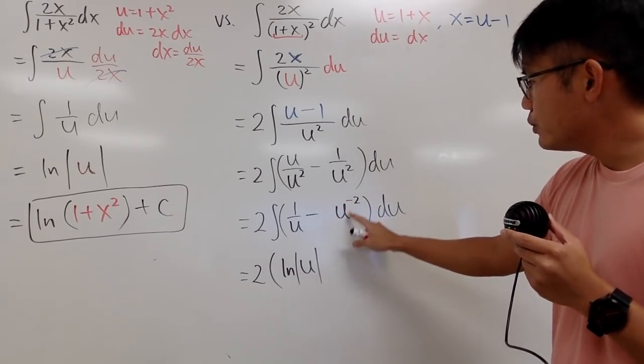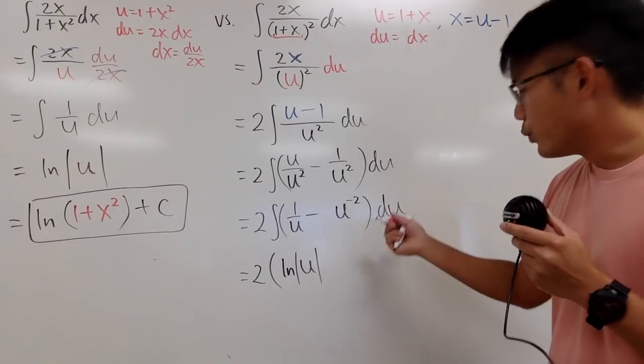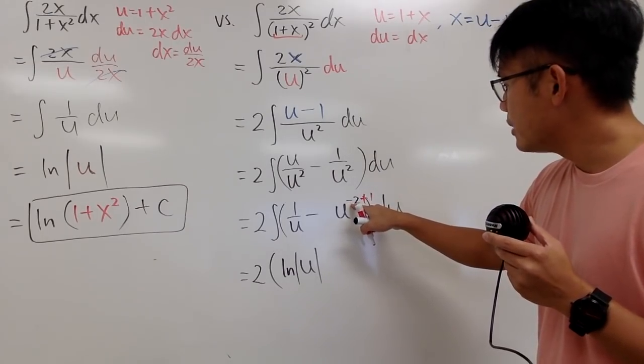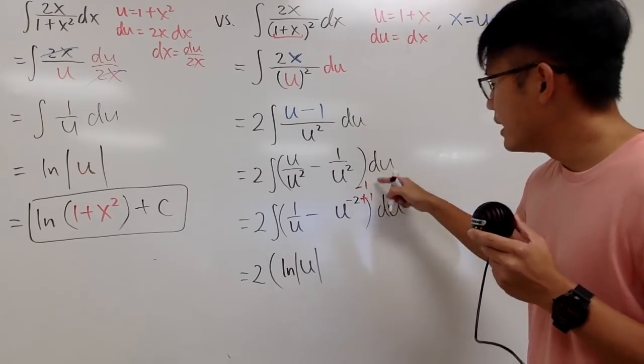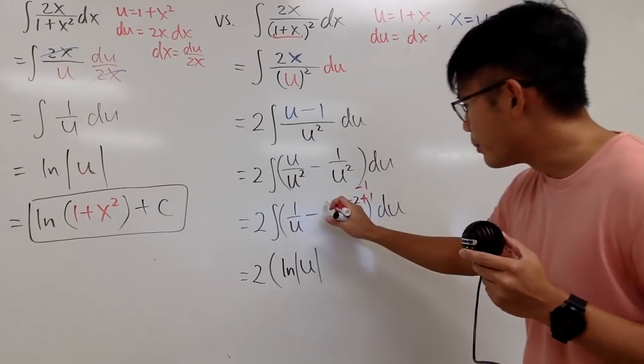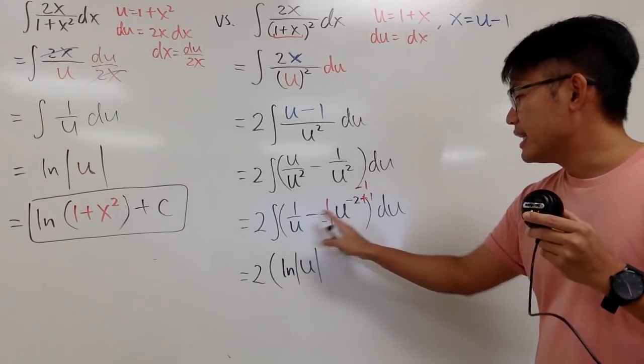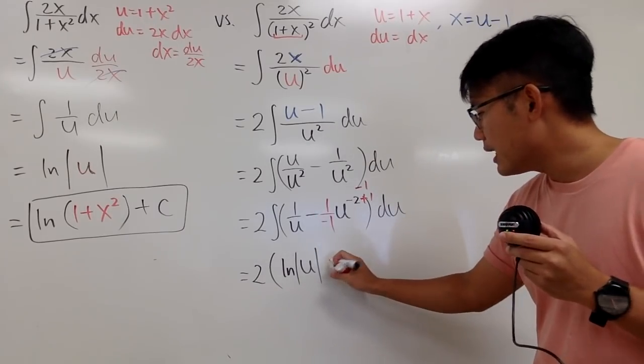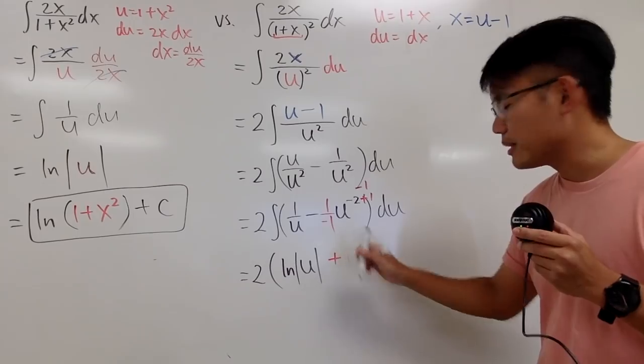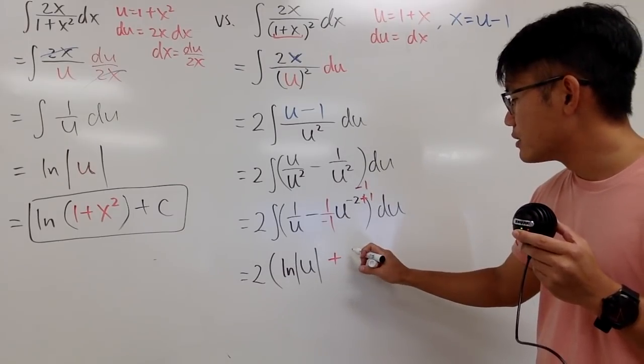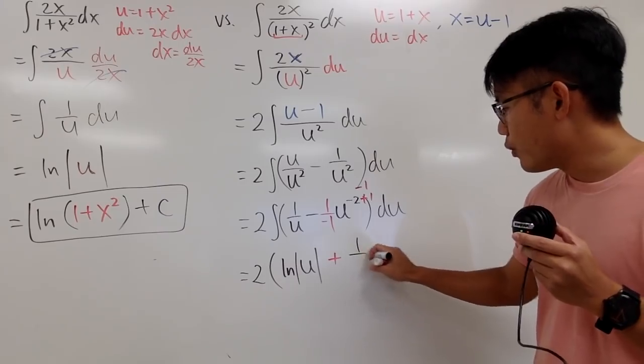Now, to integrate u to the negative 2, we are going to add 1 to the power first. And you see, negative 2 plus 1 is negative 1. And divided by this new power, I will put down as 1 over negative 1. Negative times negative 1, we get plus. So let me indicate that by putting down plus. And we get u to the negative 1 power. So I will write it down as 1 over u.